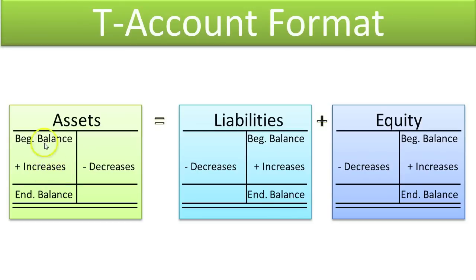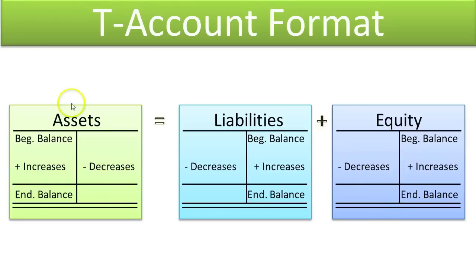Accountants developed this method over time because it allows you to do the math a little bit faster by hand. If you put all the increases together, you can add them all up quickly, as opposed to having increase, decrease, increase, decrease all in the same column. They put the decreases on the opposite side so you can add up all the increases together and then in one computation deduct the total of all the decreases. We will dig into this later in more detail to show how accountants use these T-accounts in computing balances.